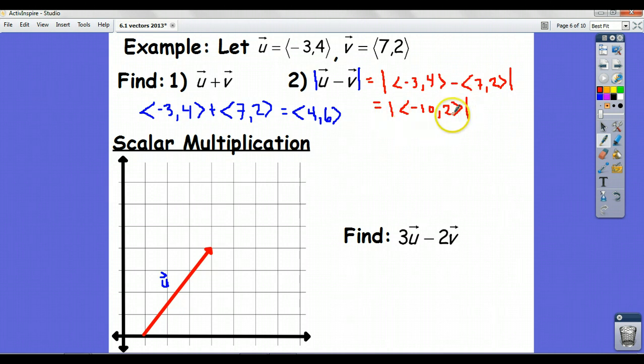Okay, so notice we're not done, because we have to find the magnitude of this vector. So, what is the magnitude of negative 10, 2? Well, we don't have a picture in front of us. All right, so we could get our graph paper and draw it, and then do the Pythagorean theorem.